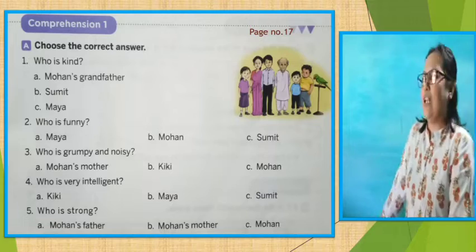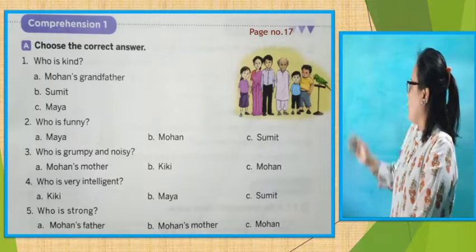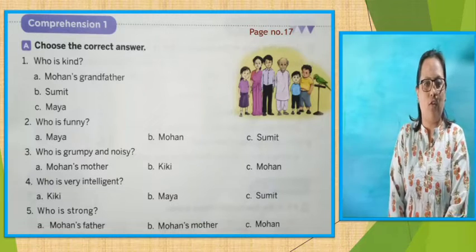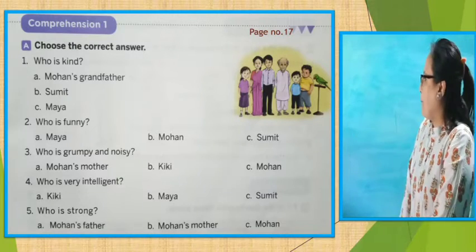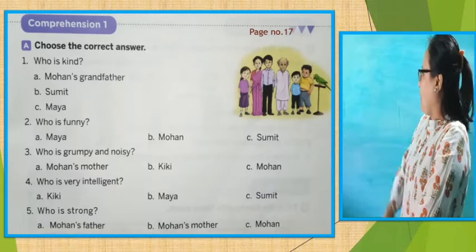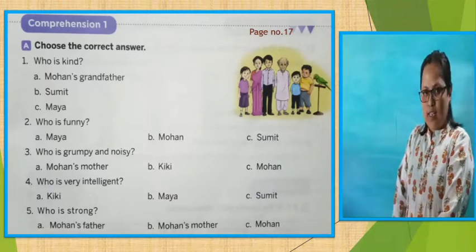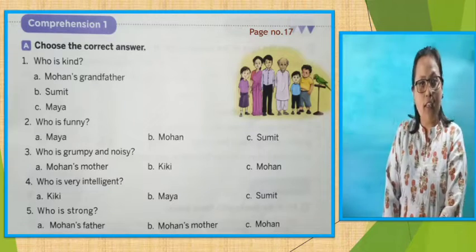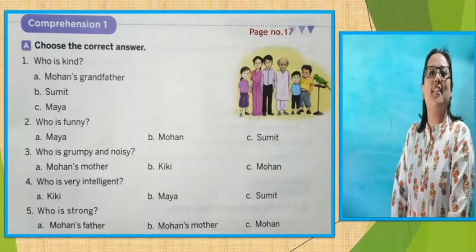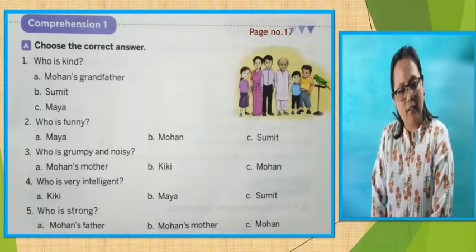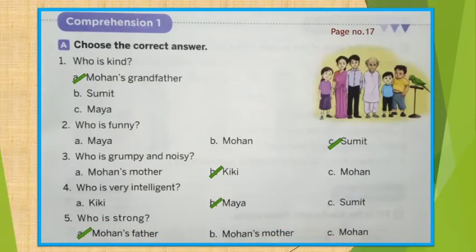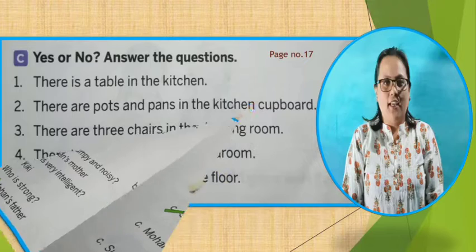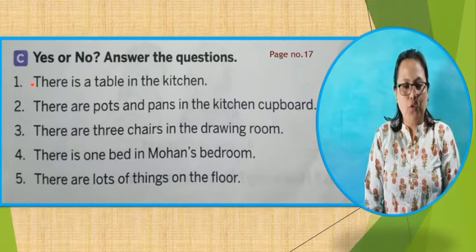Now let's go to the last question, number 5. Who is strong? Yes children, tell me now. Who is strong? Let's see the options. Number A, Mohan's father. Number B, Mohan's mother. Number C, Mohan. So tell me, who was strong? Yes — Mohan's father. So children, match your answers with my answers. Now we will do question number C.